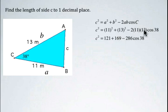So 2 times 11 times 13 is 286, and we can add 121 and 169. So we end up with c squared equals 290 minus 286 times cosine 38. Now you should get in the habit of using your calculator all in one, doing this all in your calculator in fewer steps.